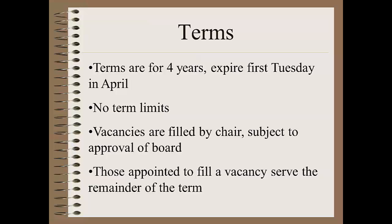Moving on to terms of board members. All board terms are for four years and expire on the first Tuesday in April. There are no term limits for district library boards. When there are vacancies on the board, someone is appointed to that position by the chairperson of the board with the approval of the majority of the board. Those appointed to fill a vacancy serve the remainder of that unexpired term they were appointed to. This means that libraries never get off the cycle of one or two board terms expiring annually, and always in April.